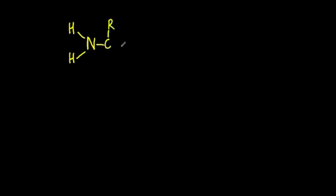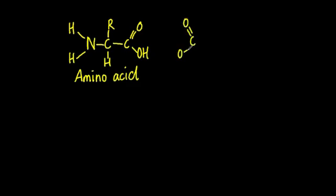Okay, so the IB wants you to be able to identify four specific chemical structures. This is the one for the amino acid. Look for the nitrogen or the R group, which is a variable group.